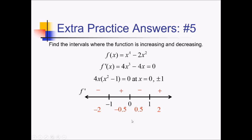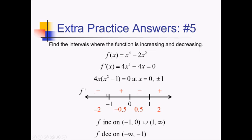Because f prime is positive on the second and fourth intervals, we can say f is increasing from negative 1 to 0, union 1 to infinity. And because f prime is negative on the first and third intervals, we have f decreasing on negative infinity to negative 1, union 0 to 1.